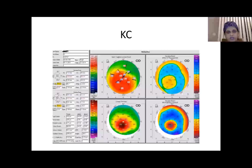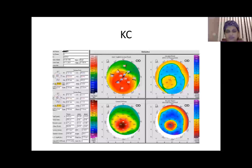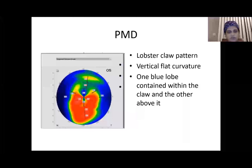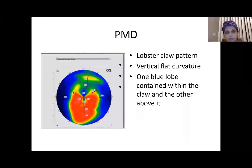A Pentacam of keratoconus typically shows inferior steepening on the sagittal curvature map, with elevation points more in the inferior paracentral area, corresponding to the thin area on the pachymetry map. In pellucid marginal degeneration, the anterior sagittal curvature usually shows a lobster-claw pattern — a horizontal bow tie whose arms may meet inferiorly, a flat vertical bow tie, and two blue lobes within the claw.